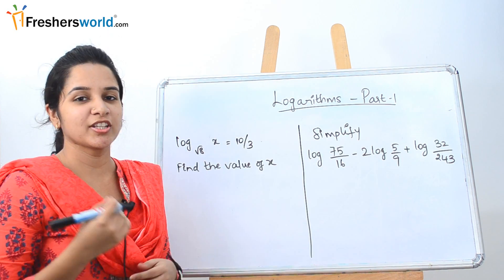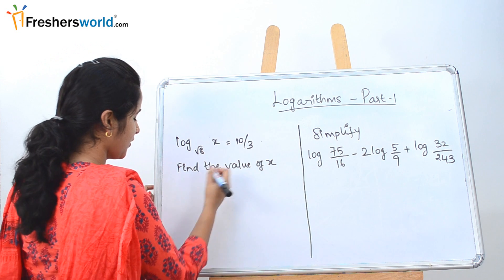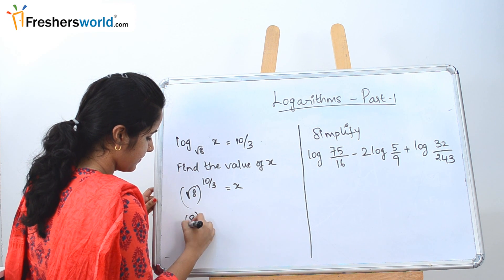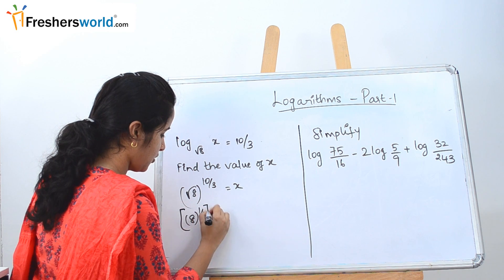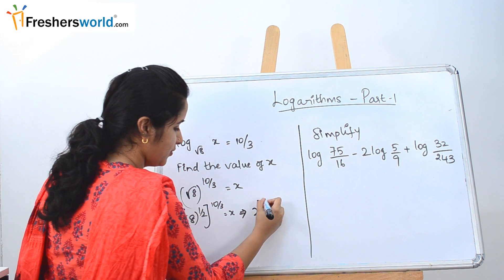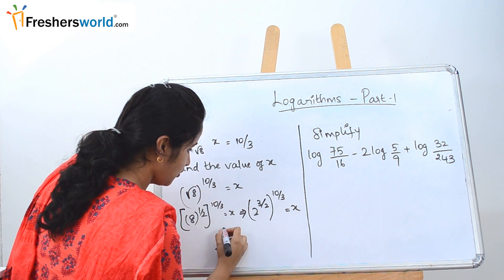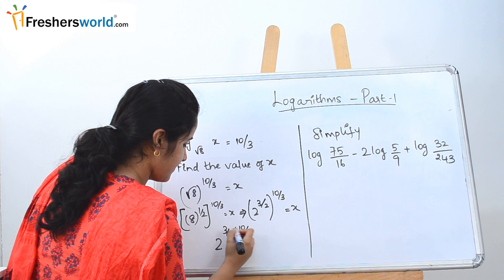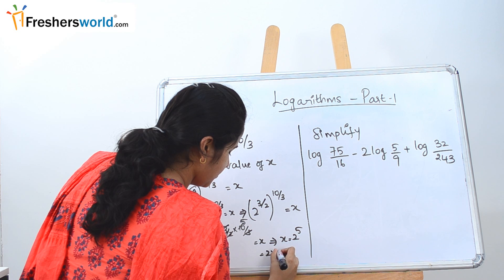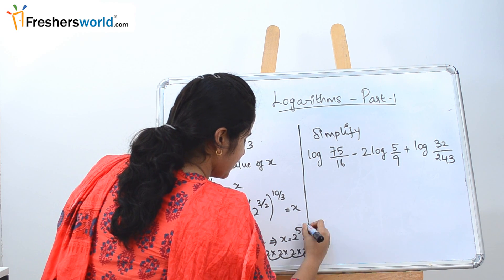Next question: log_{√8}(x) = 10/3, find the value of x. So √8^(10/3) = x. Root 8 = 8^(1/2), and 8 = 2^3, so we have (2^3)^(1/2) = 2^(3/2). Then 2^(3/2) raised to 10/3 = 2^(3/2 × 10/3) = 2^5 = 32. So x = 32.